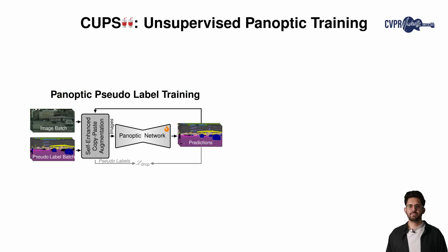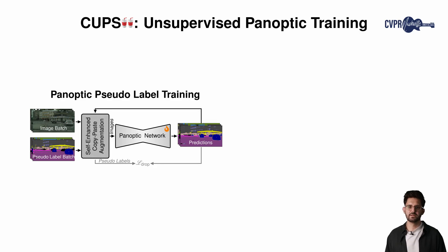We train a monocular panoptic network using our pseudolabels. As our panoptic pseudolabels only capture moving objects, we use a drop-loss strategy and present a self-enhanced copy-paste augmentation. During training, we copy confident instance predictions of the panoptic network and paste these into other images, aiding generalization to static objects.